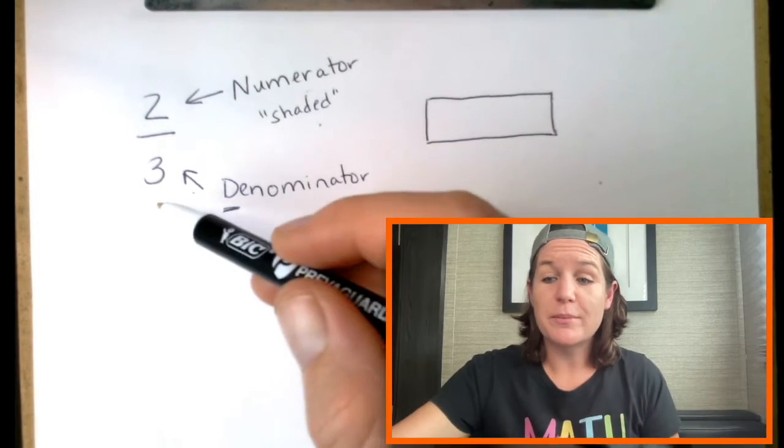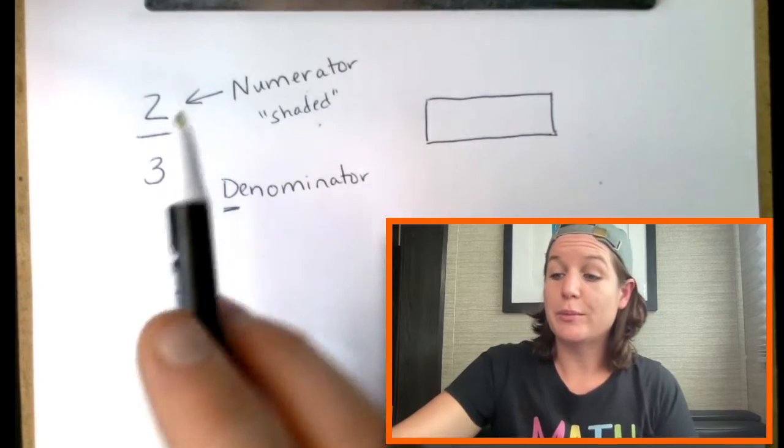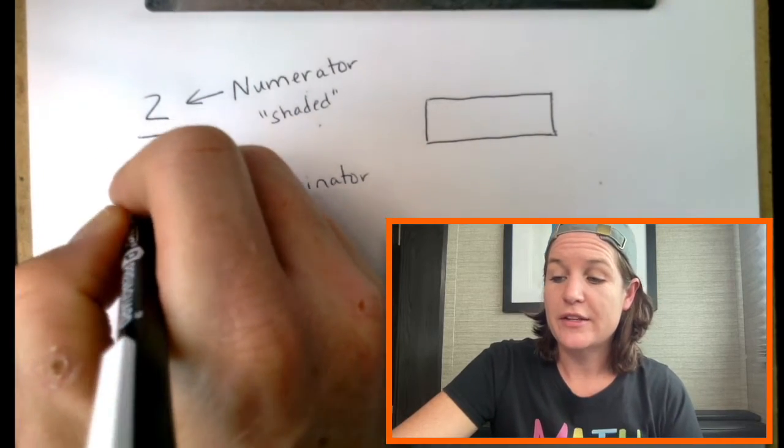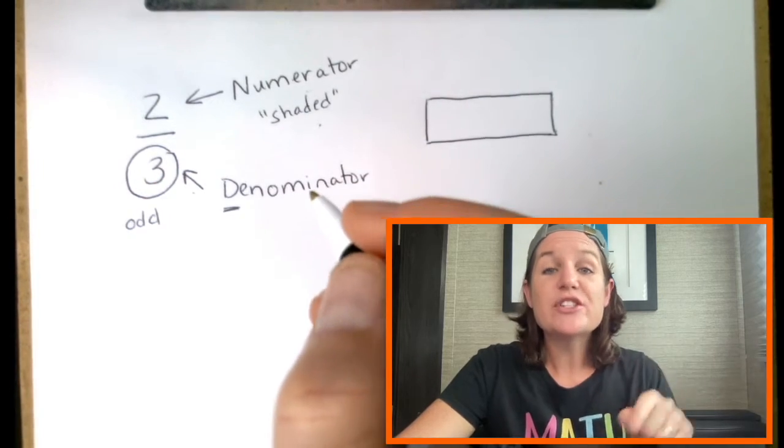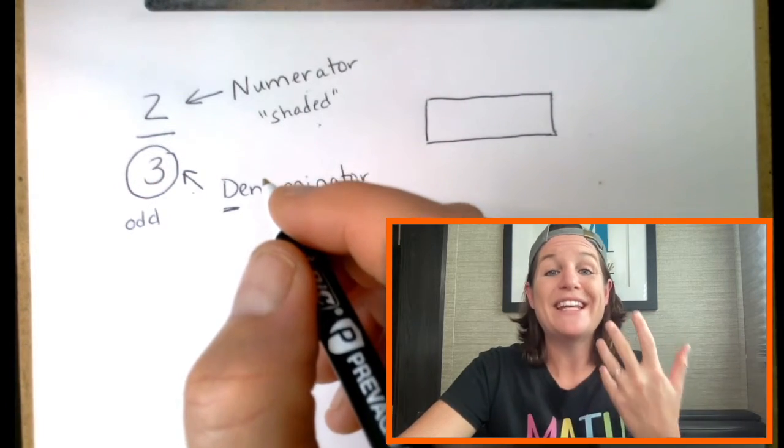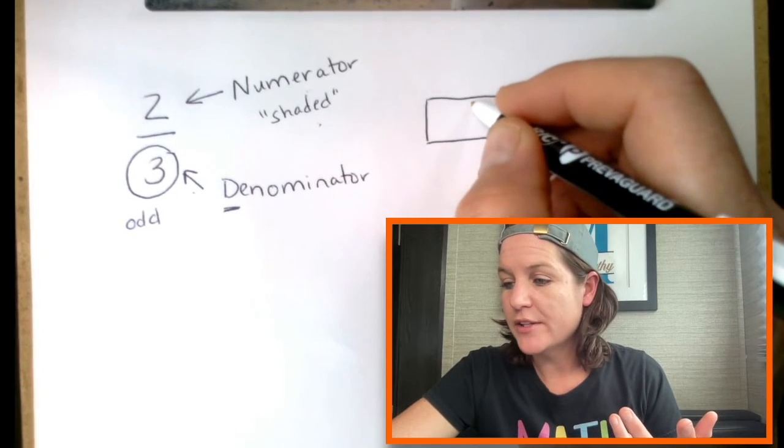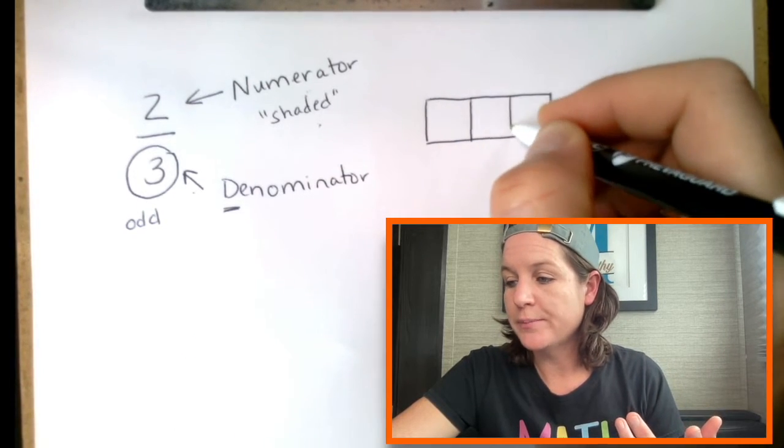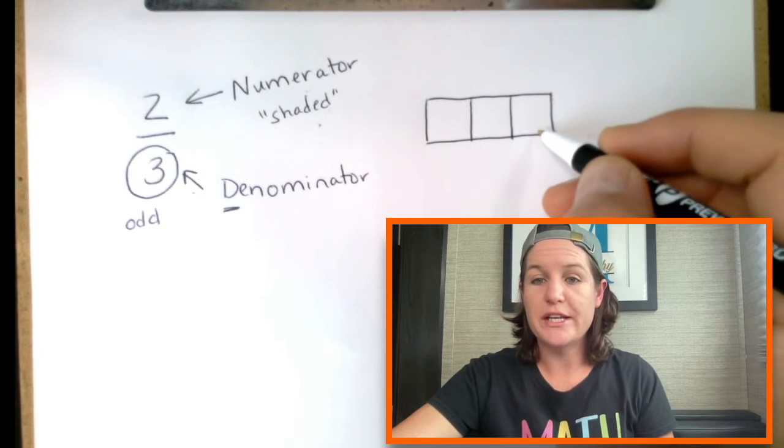So, if I jump down from the fraction bar denominator, it's the total number of equal parts. Now, this three right here is odd. I'm going to teach you something to do when you have an even fraction, but because this one is odd, we're just going to try our best to make it into equal parts. And those look really good. We've got one, two, three equal parts.